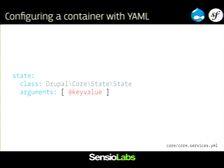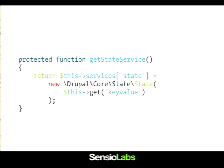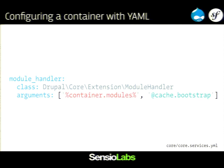A slightly more interesting example: here I have a state service. The class is State, and it takes one argument — here you see the '@' sign followed by 'key_value'. This is a convention saying: I want the key_value service to be injected here. So the state class takes a key_value argument, which is another service. If we look at the generated implementation, you can see that we create a new object of State and inject the instance of key_value. In Symfony, all the services have a name, and if you want to get a service, you need to know the name. We also have a way to configure things — using '%parameter_name%' syntax means we need to replace this with the value of that parameter.